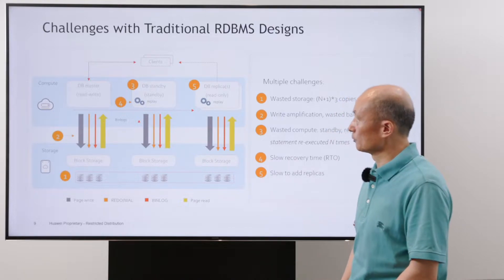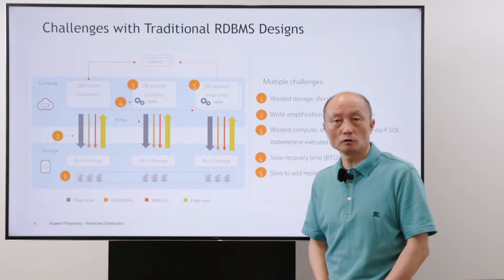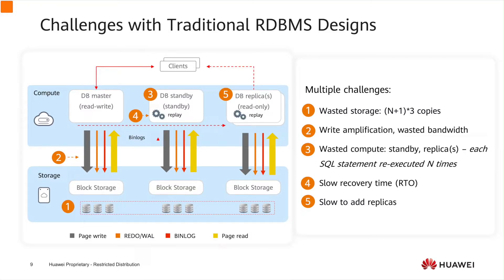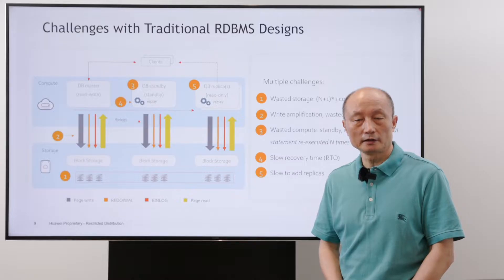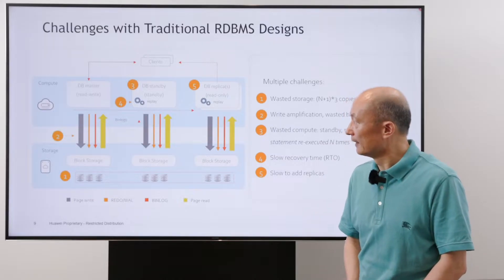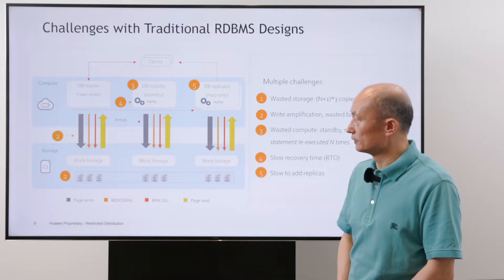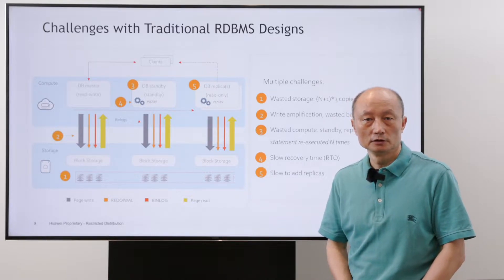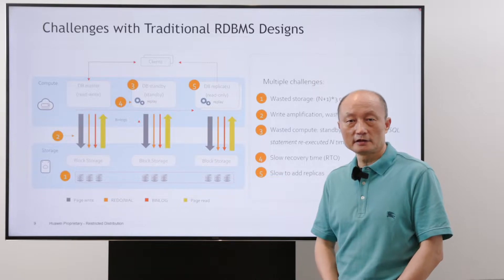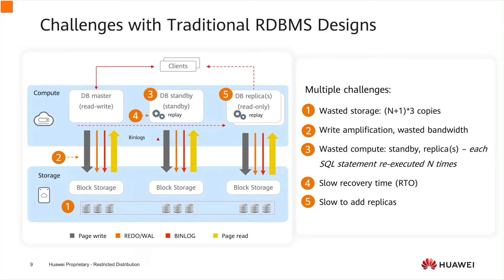This is the typical deployment of a database at Huawei Cloud. In this deployment, there are one master, one standby, and one replica. Each database operates its own dataset. You can see there are several challenges with this design. First, the data is stored in multiple copies — each node has four sets of data, plus three redundant copies in storage for reliability. This is a big waste of storage.